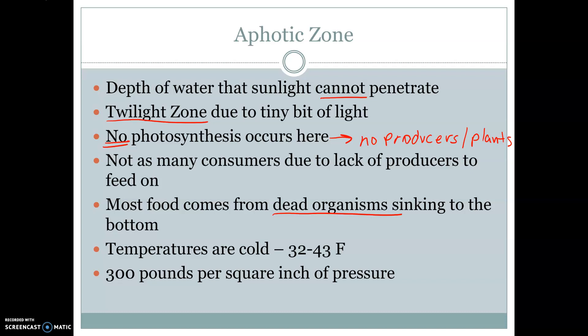Temperatures are very, very cold here — between negative 32 and negative 43 degrees Fahrenheit — really, really cold. And about 300 pounds per square inch of pressure, so a very immense amount of pressure. As we decrease in depth, we're also going to see a decrease in temperature and in pressure.